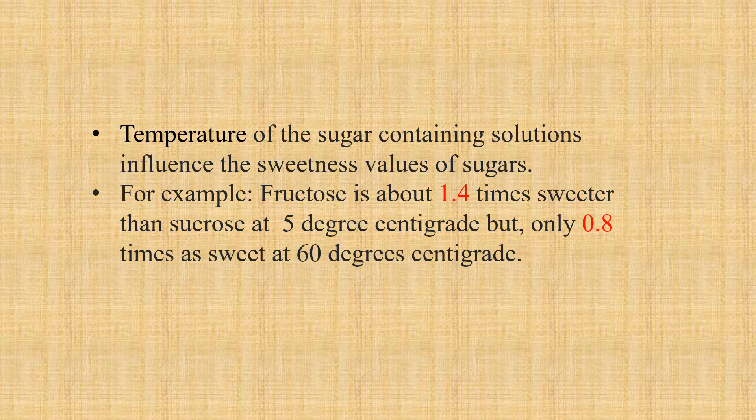This is the reason that when we are making desserts, the sweetness is difficult to judge. For example, fructose is about 1.4 times sweeter than sucrose at 5°C, but only 0.8 times as sweet at 60°C. You can see that as temperature increases, the sweetness of the sucrose decreases.